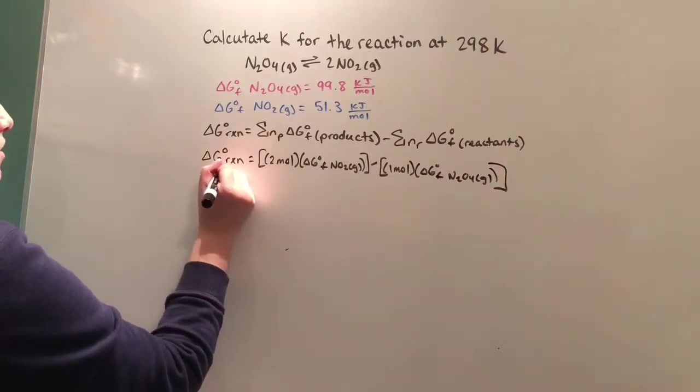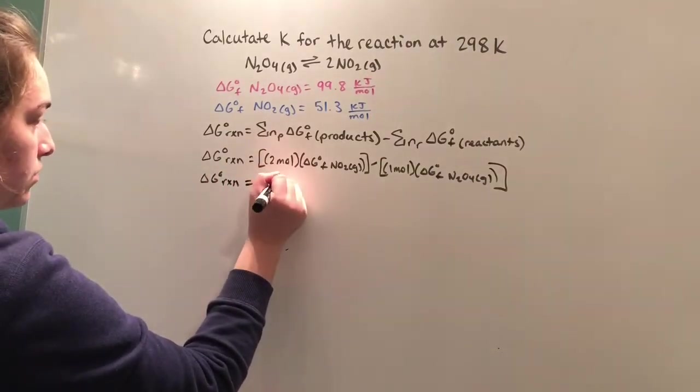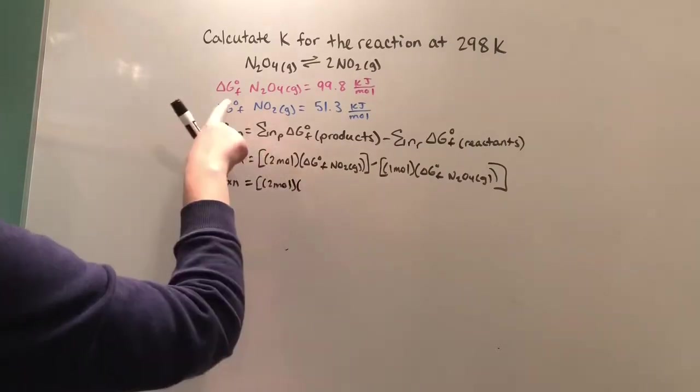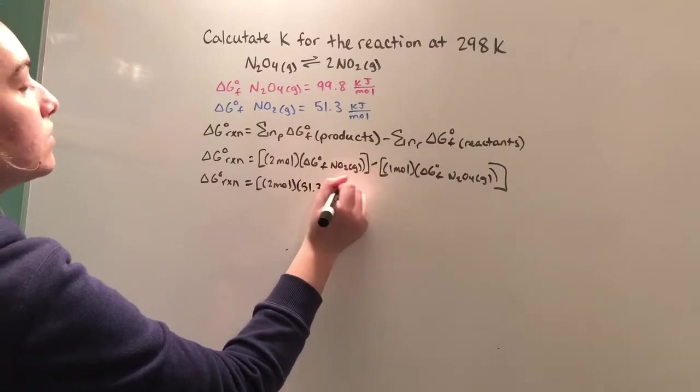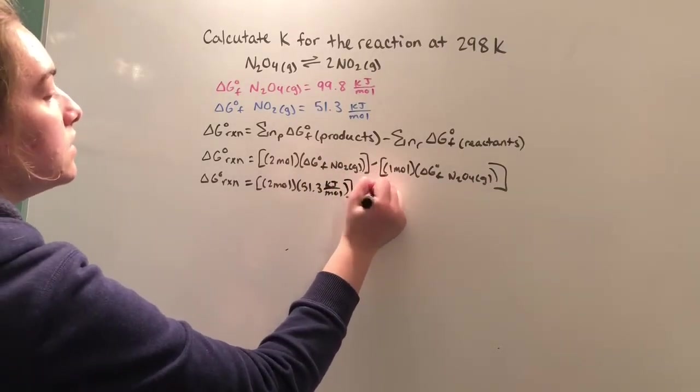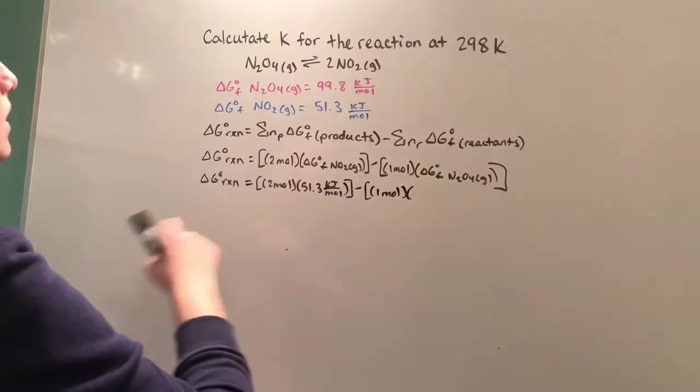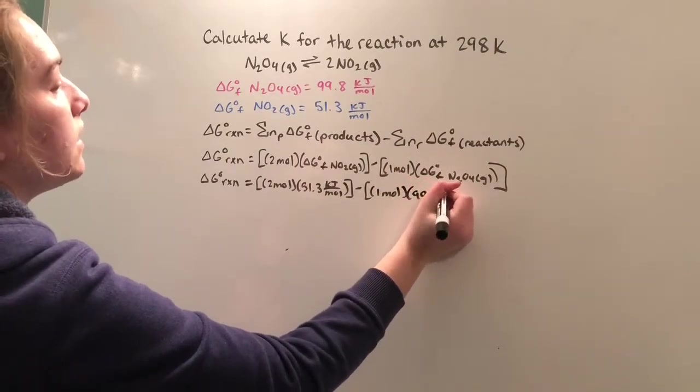So the ΔG reaction equals two moles multiplied by 51.3 kilojoules per mole minus one mole multiplied by 99.8 kilojoules per mole.